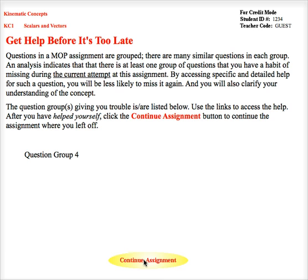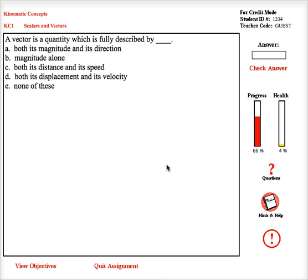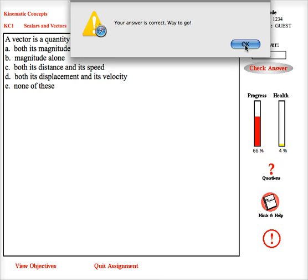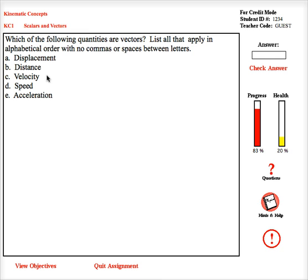Maybe next time I'll get that one correct. The vector is a quantity that has both magnitude and direction. The answer is A. I have one last question to get correct, and I think I can do this now. I want to know which are vectors. I remember that. I read about it.